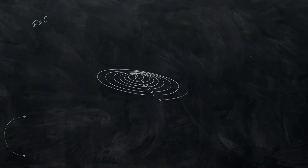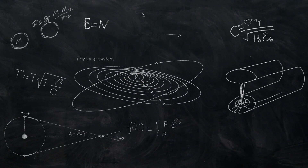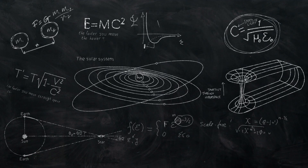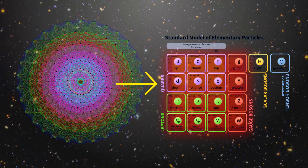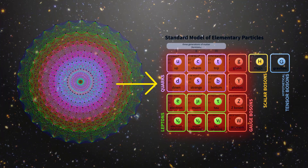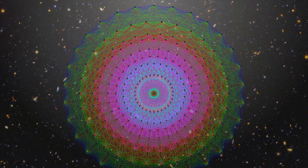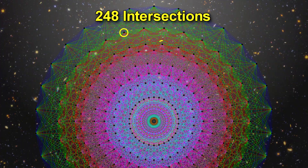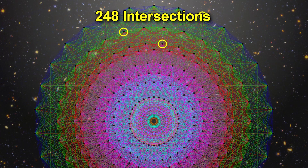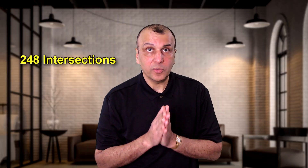Mathematics happens to be the language of the universe. What Lisi did is he found a relationship between this object and all the forces and particles we know about. If you were to look at the structure closely, you would see that it has 248 points, or intersections. Just remember that number — 248 — for a minute. Now let me tell you how that number is related to all the forces and particles of the universe.